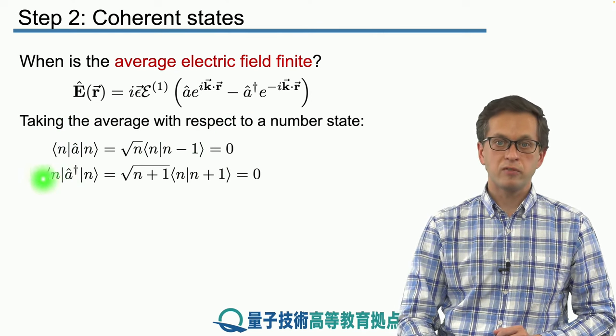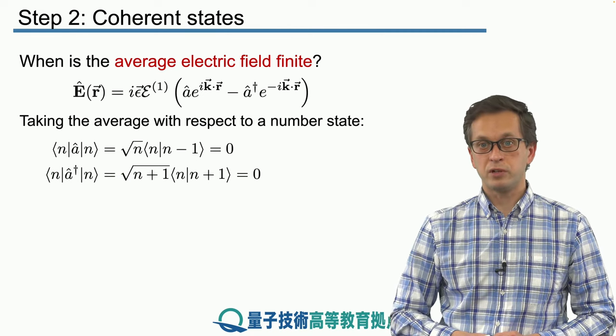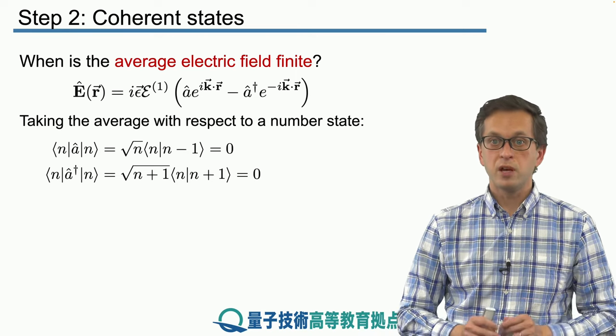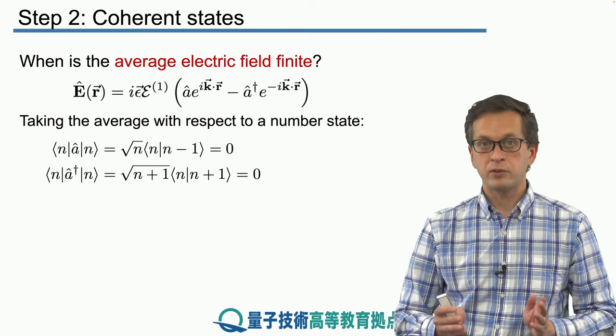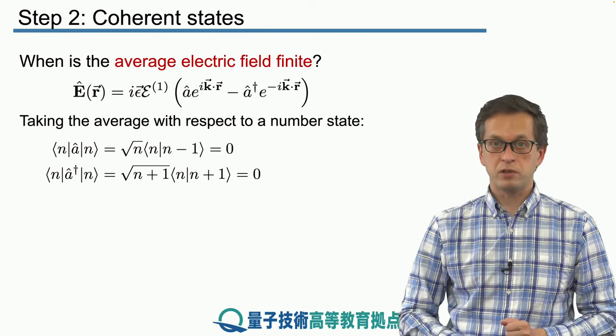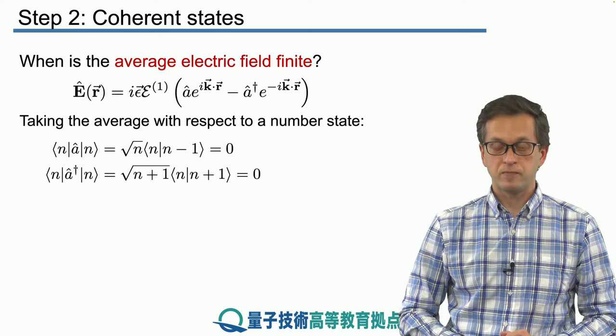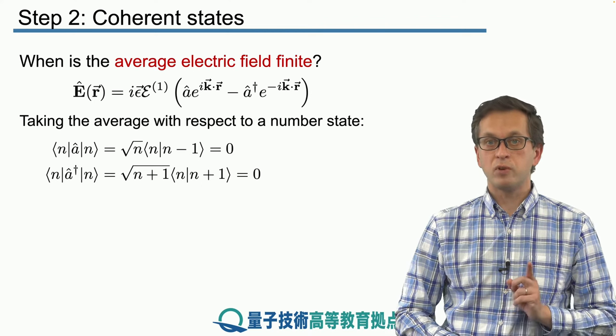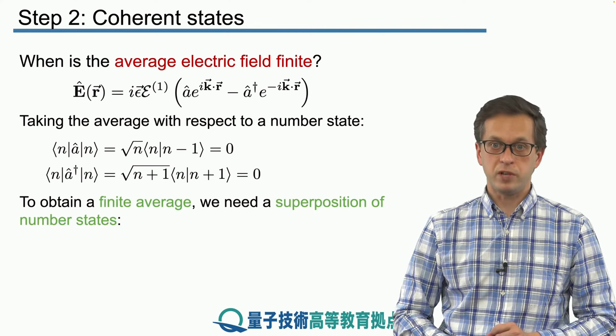And similarly for the average of a dagger, for the creation operator for the mode, the average of that operator is also 0, meaning that the whole average for the electric field must be also 0 for any number state. So in order for this average to be non-zero, we must consider superposition of number states.